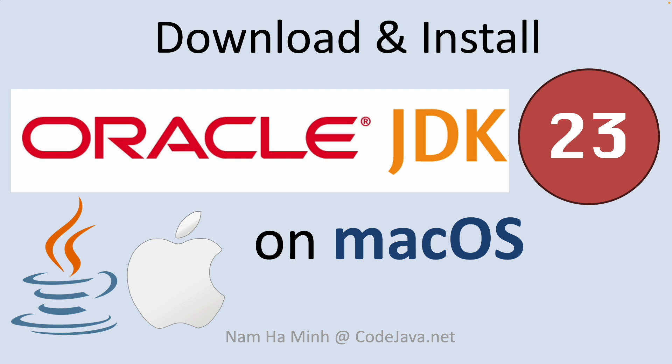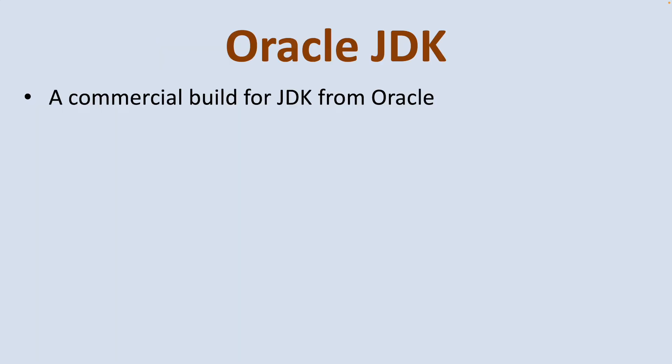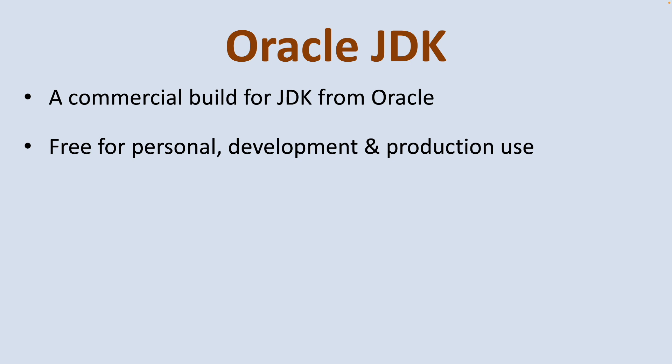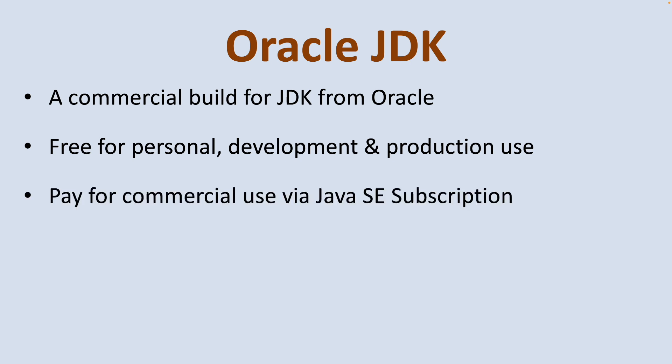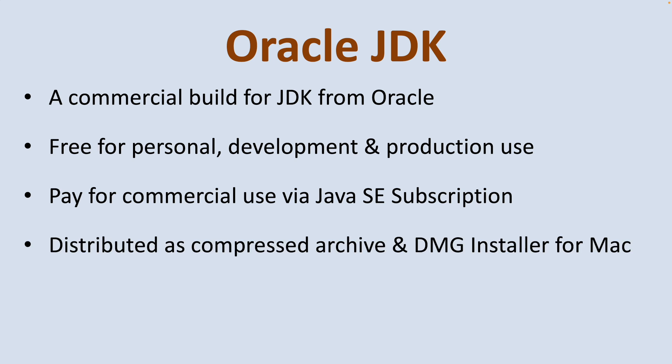Firstly, let's understand what Oracle JDK is about. Oracle JDK is the commercial build of the Java Development Kit from Oracle Corporation. It is free for personal development and production use, but organizations and businesses should pay for commercial use via a Java SE subscription. Oracle JDK is distributed as a compressed archive file or DMG installer for macOS.